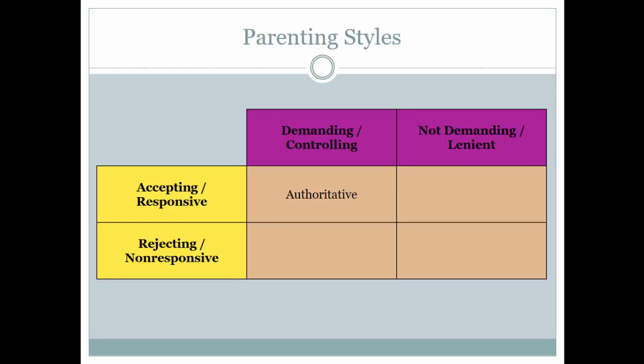Parents who are high in demand and control but high in rejecting or non-responsiveness are called authoritarian parents. These are the stereotypical, overly strict parents — the 'my way or the highway' kind. They're more likely to yell to get what they want, compared to authoritative parents who explain the reasons behind their rules to help the child understand. You can almost think of authoritarian parenting as similar to a dictatorship, where children just need to do what their parents say.